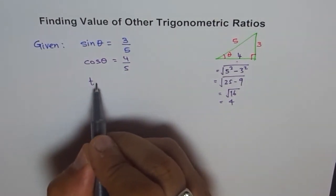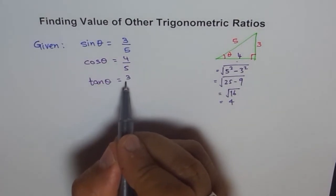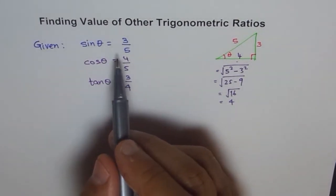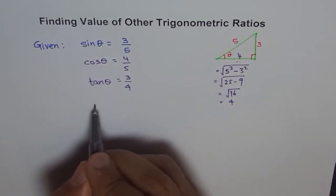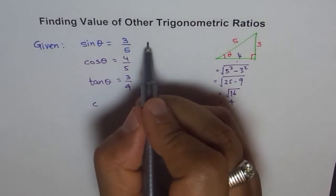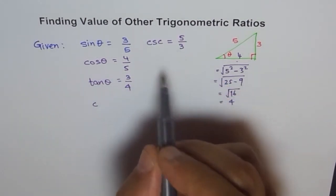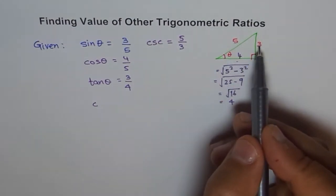And how about tan theta? Tan theta is 3 over 4. And how about their reciprocals? So, reciprocal of sin is cosecant. We write cosecant is 5 over 3. How? Cosecant is hypotenuse over opposite, 5 over 3, or reciprocal of sin theta.